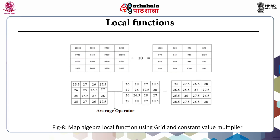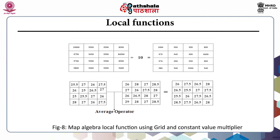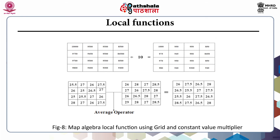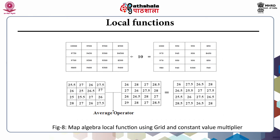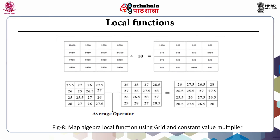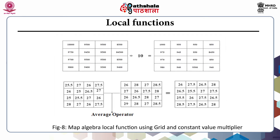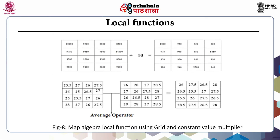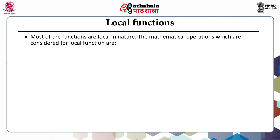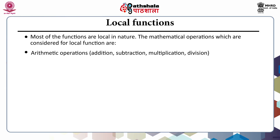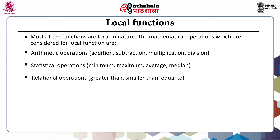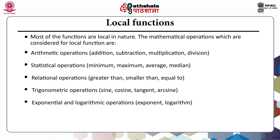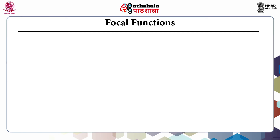The first raster shows values in pascals; when divided by 10 we get the output as one-tenth of the initial values. For the average operator, we have two raster data sets and take the average pixel by pixel, so the final output raster contains the averaged values at corresponding points. Generally most functions are local in nature. The mathematical operations for local functions are: arithmetic operations (addition, subtraction, multiplication and division); statistical operations (minimum, maximum, average or median); relational operations (greater than, smaller than or equal to); trigonometric operations (sine, cosine, tangent, arcsine); and exponential and logarithmic operations such as exponent or logarithm.